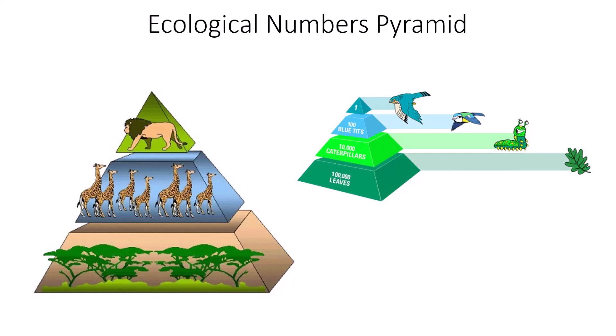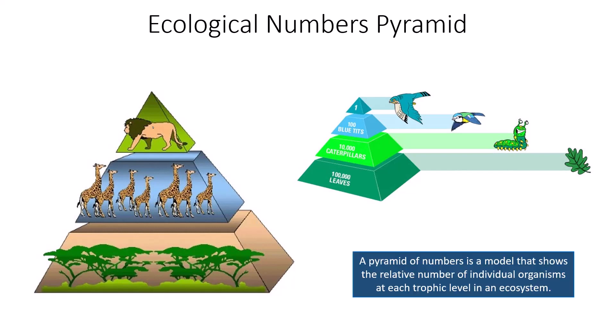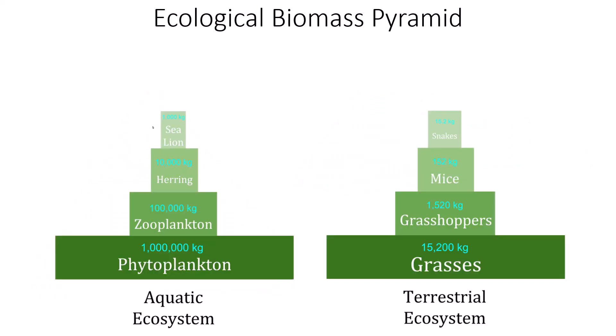In another numbers pyramid example, there are far more acacia trees to support a smaller number of giraffes, which supports an even smaller number of lions. Every time you go up a level on an energy or numbers pyramid, you are decreasing the number of organisms that feed at that level. A pyramid of numbers is a model that shows the relative number of individual organisms at each trophic level in a particular ecosystem.